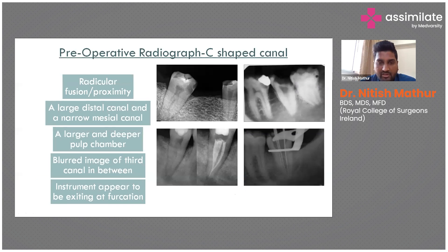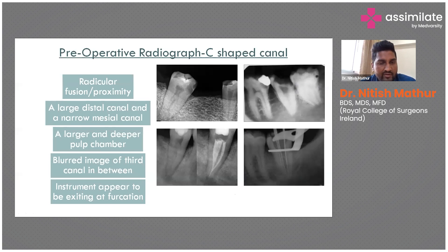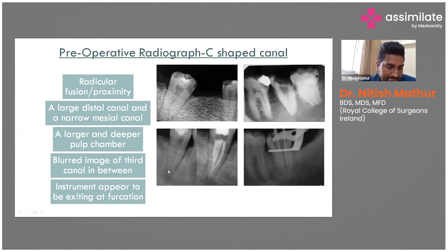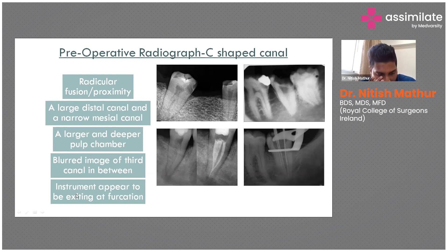C-shaped canals fall under complex root canal anatomy, and CBCT is indicated, but we can still identify a C-shaped canal from an IOPA. Five radiographic features should be assessed to suspect a C-shaped canal.